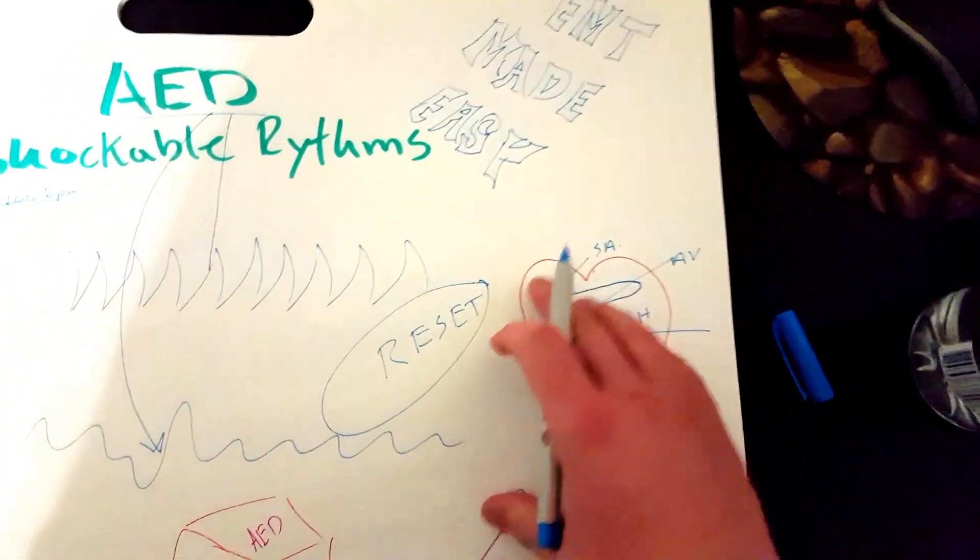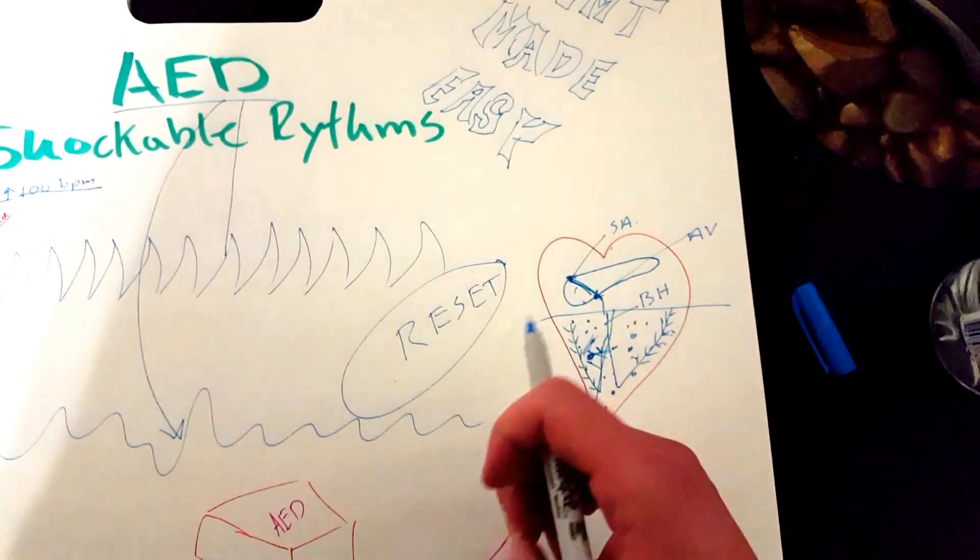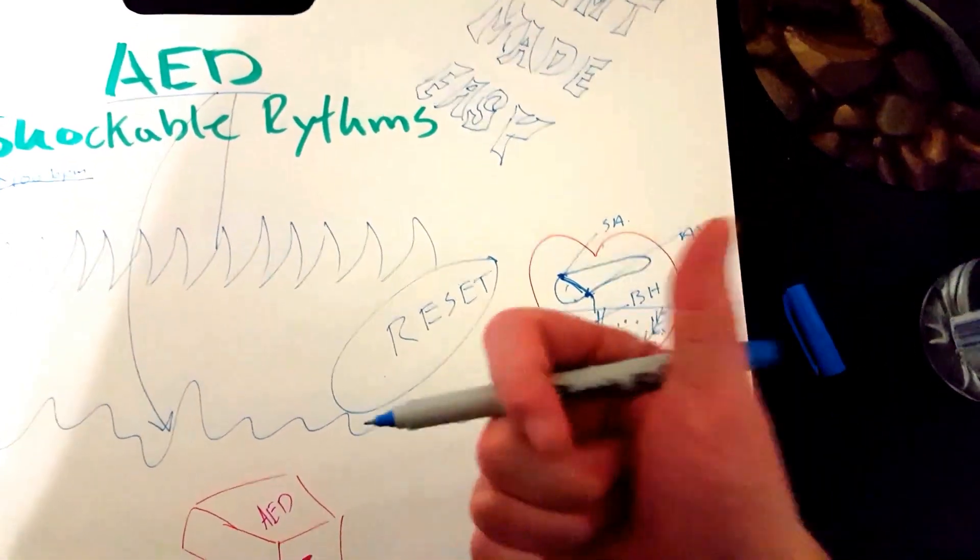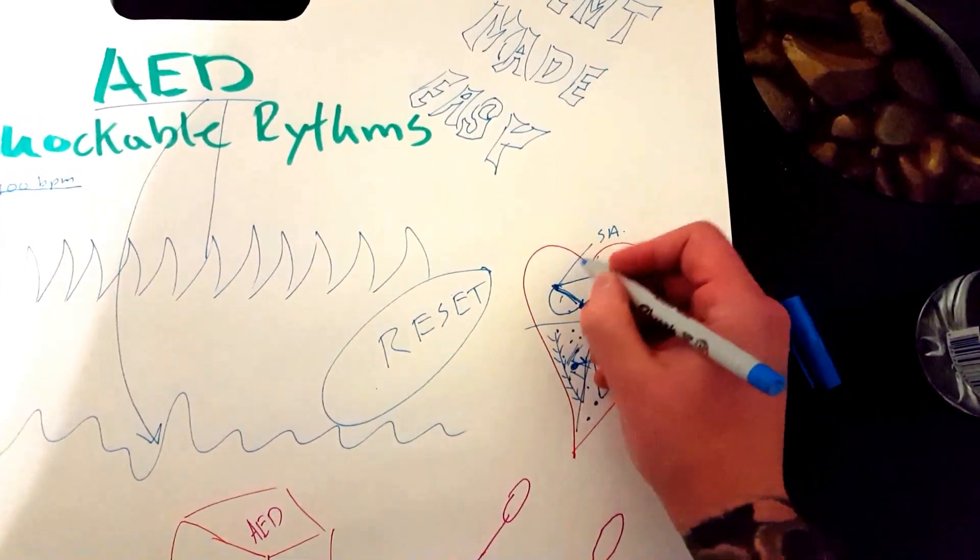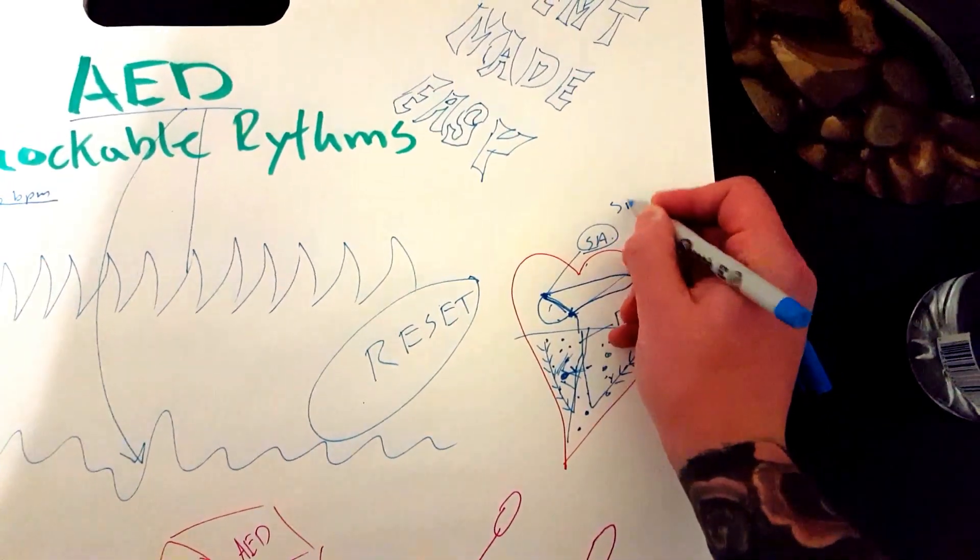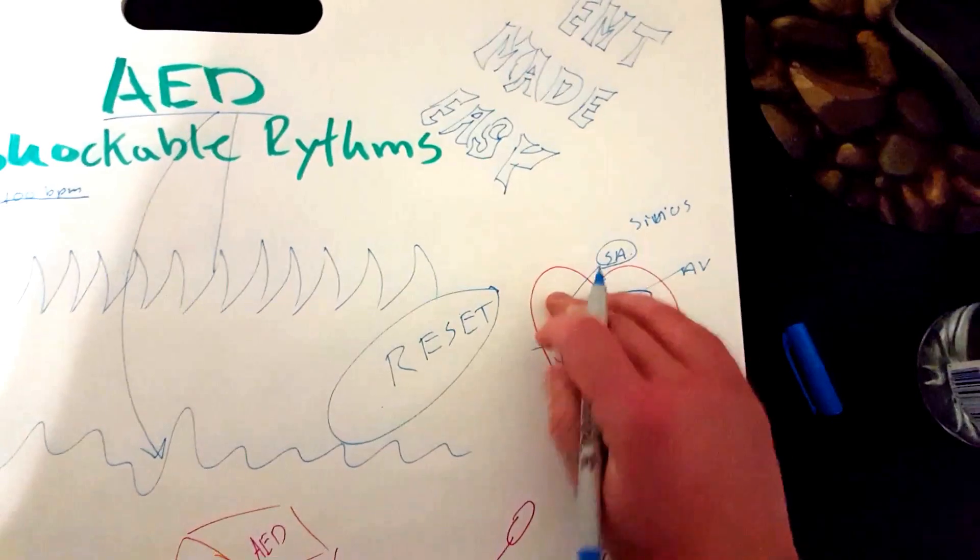Now, in case you don't know, a normal sinus rhythm, you hear that when it's a normal rhythm. It's called a normal sinus rhythm because the rhythm of the heart is generated in the sinoatrial node. So sinus rhythm. In case you didn't know that. Sinoatrial node.